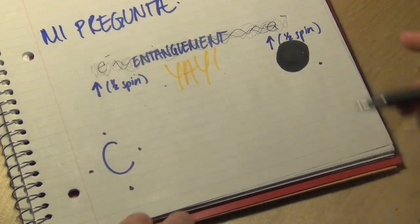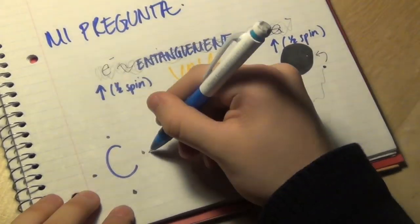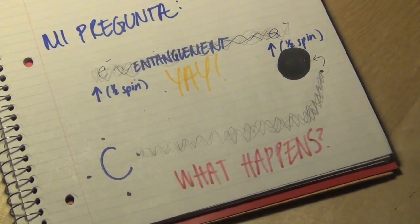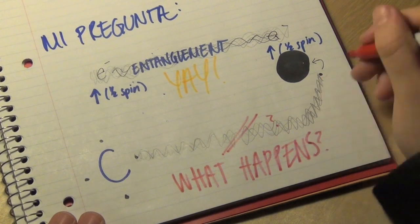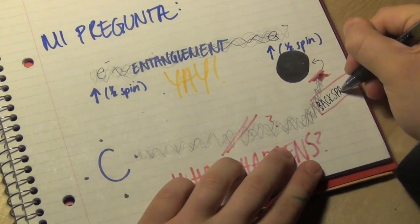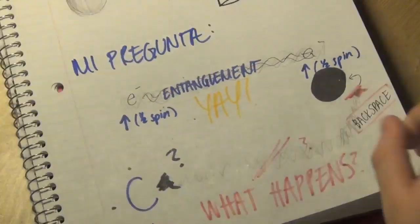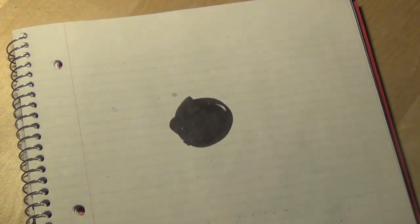In a second, it will be consumed by the singularity. But what happens? Is the entanglement severed? Is the electron that is being sucked into the black hole deleted, defying all the laws of physics? Does it get deleted with the electron orbiting the carbon atom in the protein I was talking about?